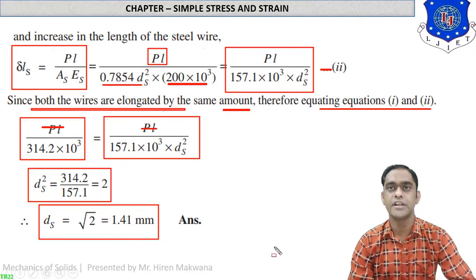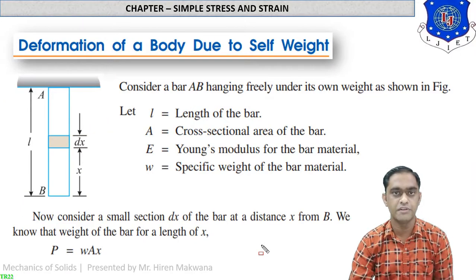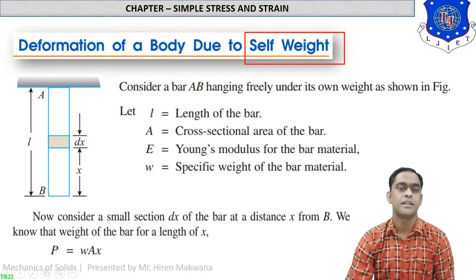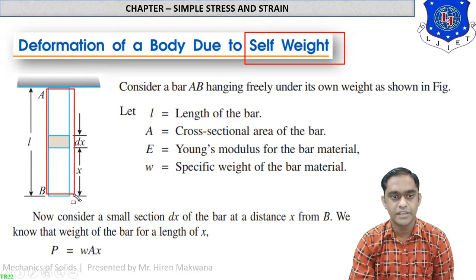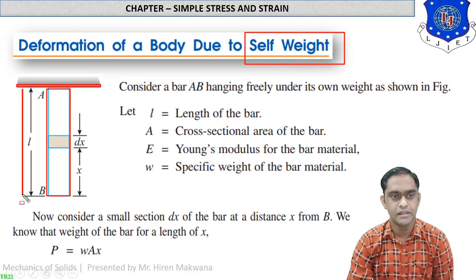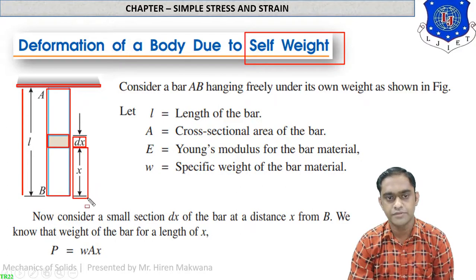Those are the two examples on the previous topic. Now let us start a new derivation — this is the most important theory: deformation of a body due to self weight. Assume a body AB is hanging from a fixed support at the top. The length of the body is L, with point A at the top and point B at the bottom. We cut a small strip of length dx at a distance x from the bottom.